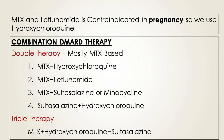If the patient is not responding to a single DMARD, that does not mean you should immediately move to biological agents. Instead, you should attempt a combination of multiple DMARDs. This gives rise to the concept of combination therapy of disease-modifying anti-rheumatic drugs.